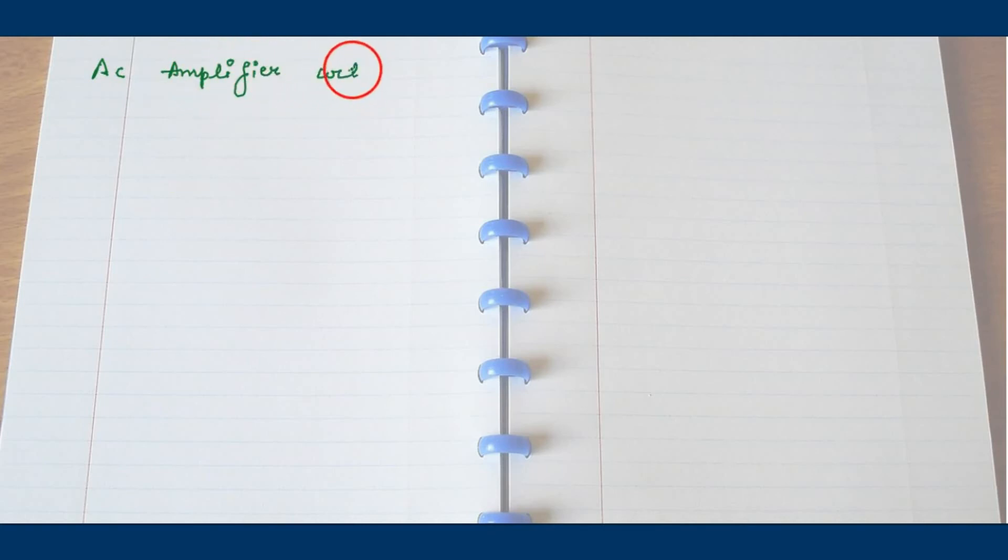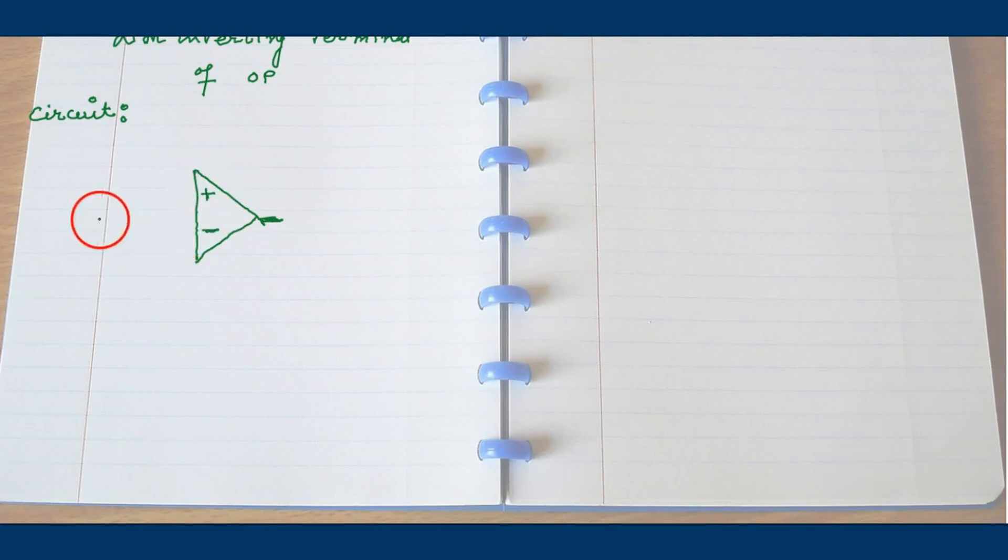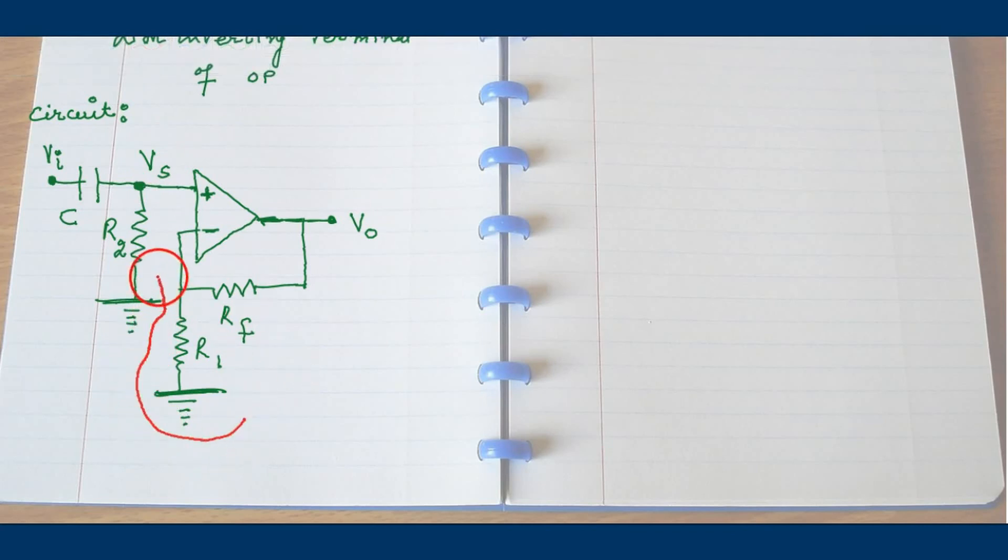Let's discuss AC amplifier with non-inverting terminal. This is operational amplifier. Now the capacitor to be attached with non-inverting terminal. Here output voltage, our feedback resistor. This is C, this is R1, RF feedback resistor, Vs, VI, R2. This much is the non-inverting op-amp. This is non-inverting op-amp connections.